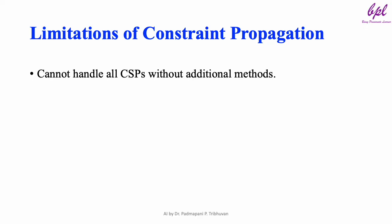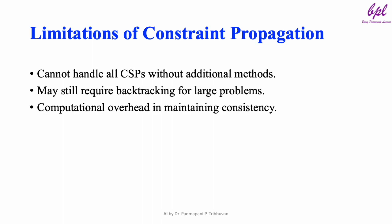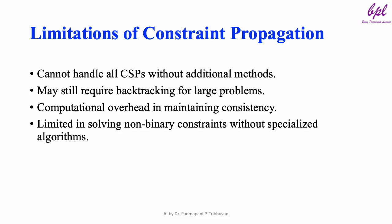Limitations of Constraint Propagation: Constraint Propagation is not perfect. For large or highly complex problems, it often needs to be combined with other techniques like backtracking. Additionally, it ensures computational overheads as it constantly maintains consistency between variables. Constraint Propagation is limited in solving non-binary constraints without specialized algorithms.